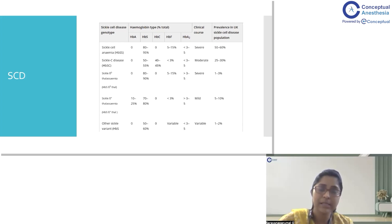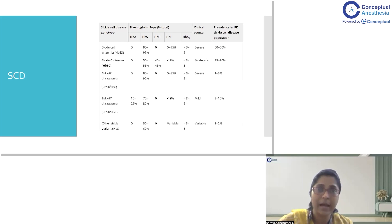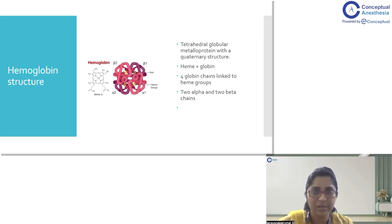There is a separate entity called sickle cell beta-thalassemia, which can be either homozygous or heterozygous. There are other variants including the Arab variant and Asian variant. The African variant is associated with much greater severity.